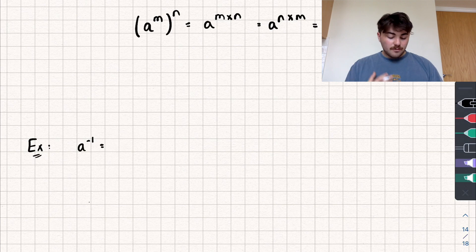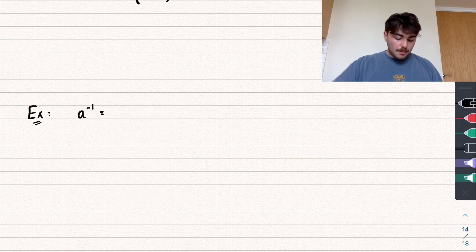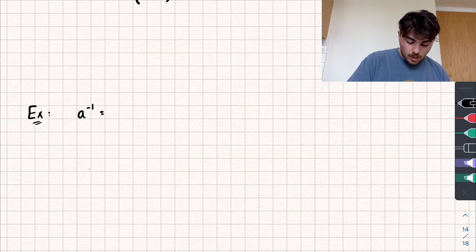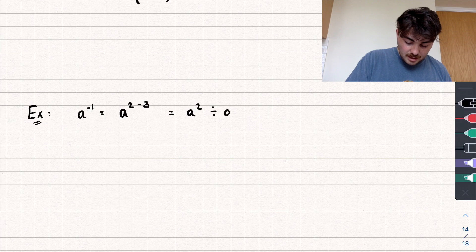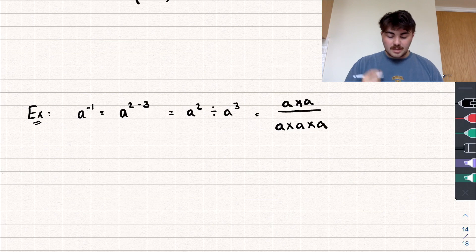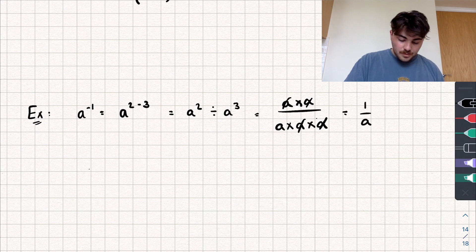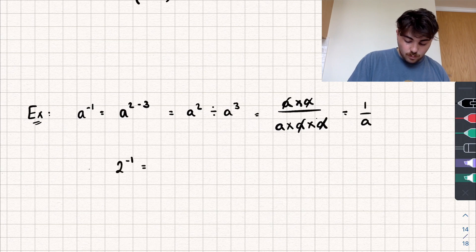From these laws we can derive further facts. Consider a to the power of negative one. We can write this as a to the power of two minus three, which equals a squared divided by a cubed — that's a times a, divided by a times a times a. Two of the a's cancel, leaving one over a. So a to the power of negative one is just the reciprocal of a. For example, two to the power of negative one equals one over two.